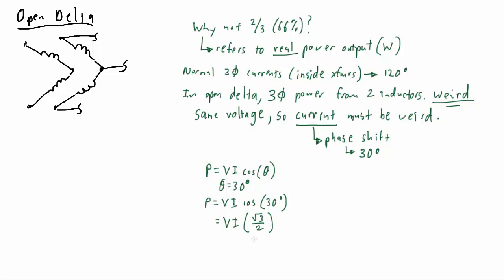And here we see our old friend the square root of three and what is the square root of three over two? Well bring out your calculators and you'll find out that it is 87 percent. So the two inductors when configured together only have a maximum output of real power of 87 percent. And this is due to our phase shift.